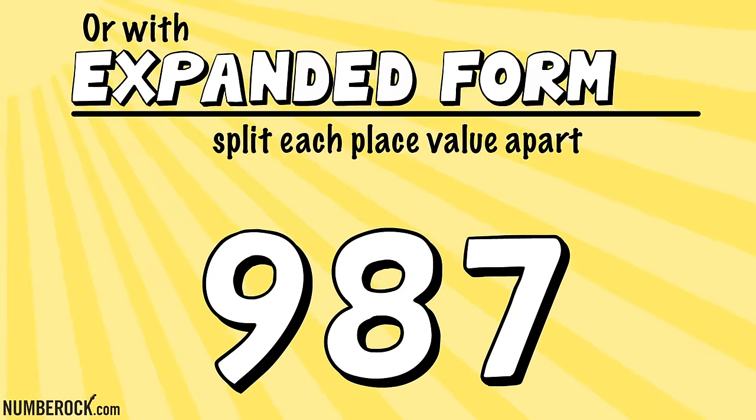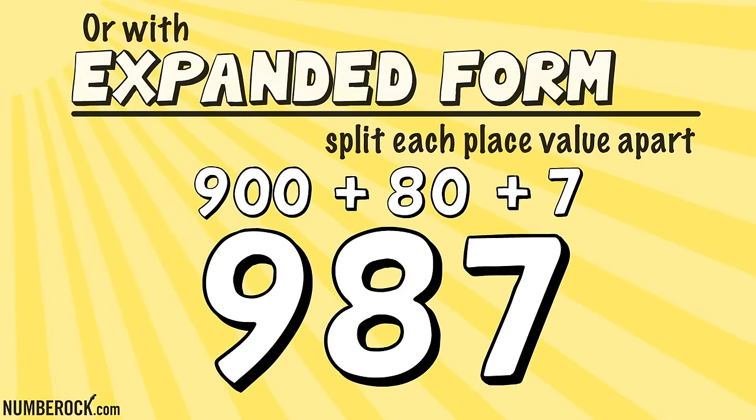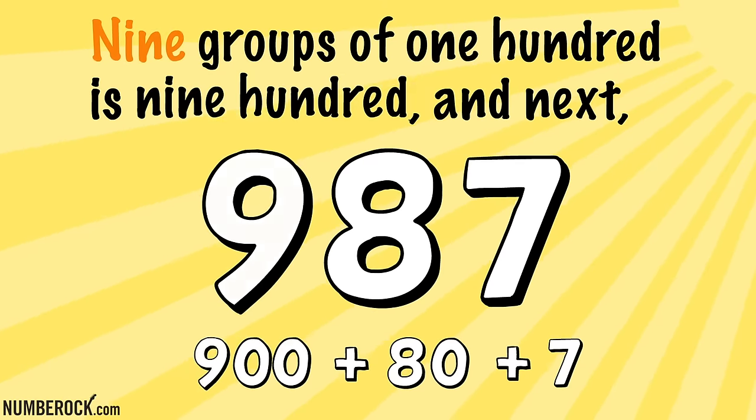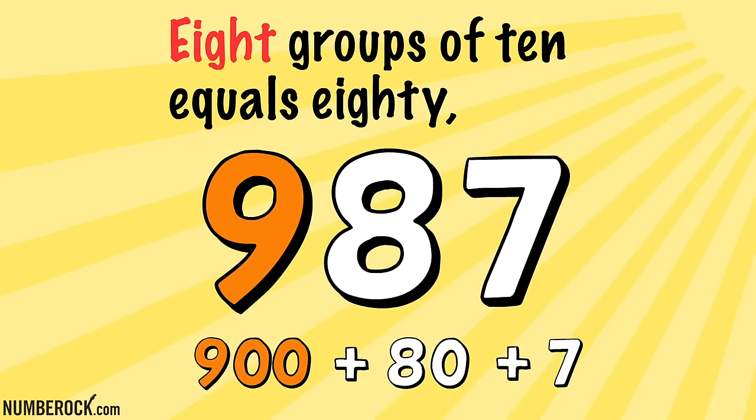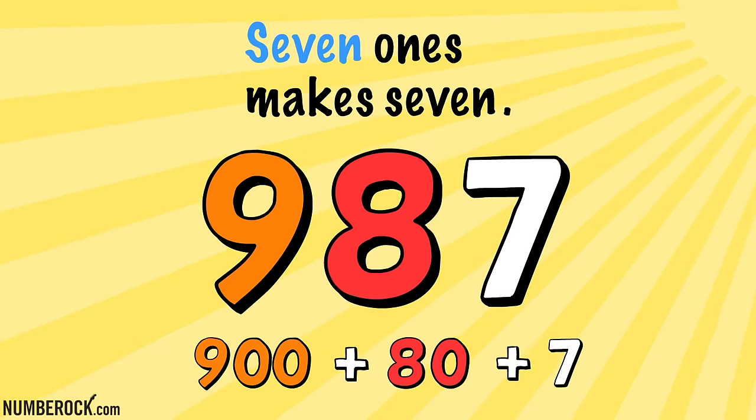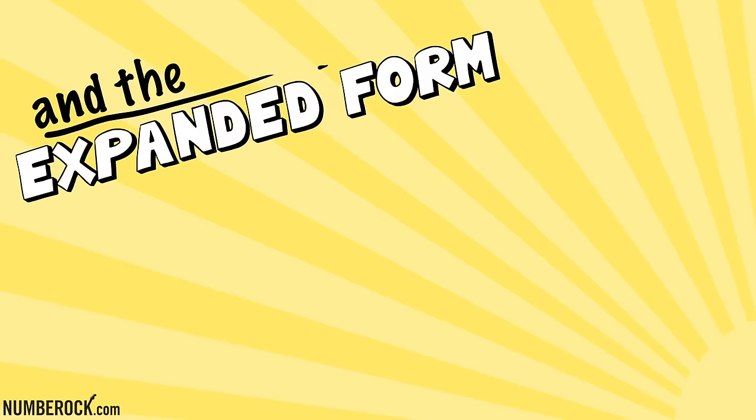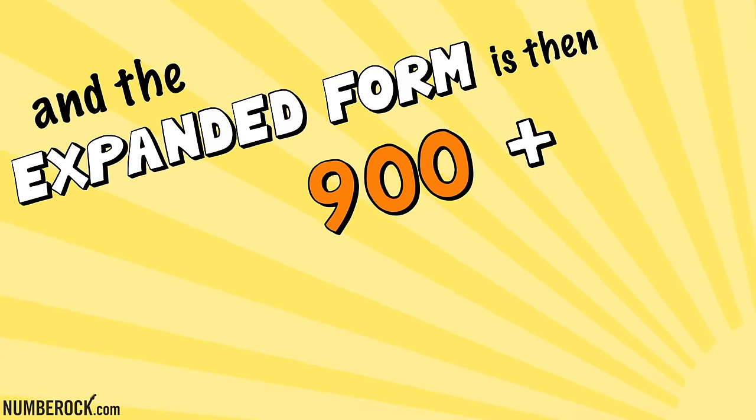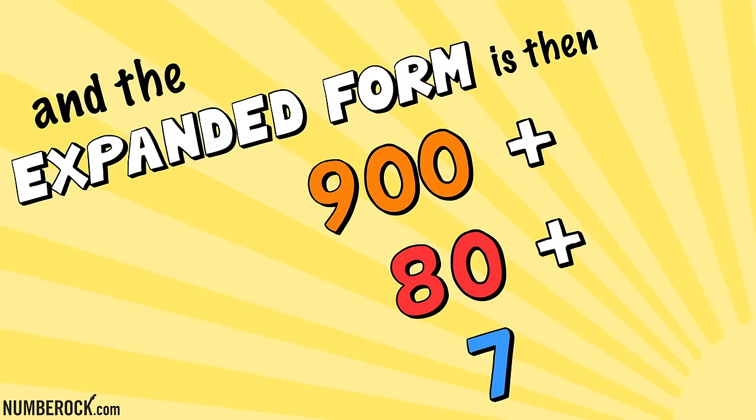With expanded form, we split each place value apart. Nine groups of 100 is 900, and next eight groups of 10 equals 80. And then what is left? Seven ones make seven, and the expanded form is then 900 plus 80 plus 7.